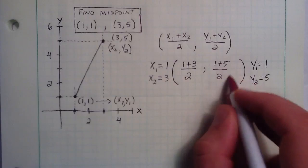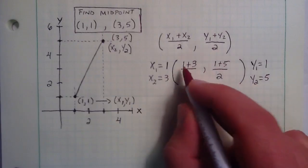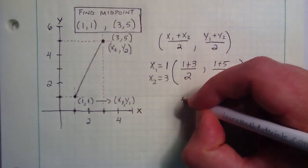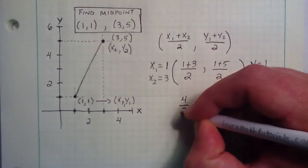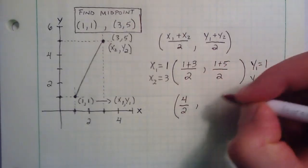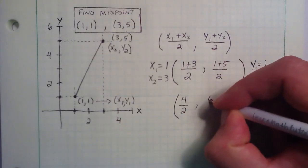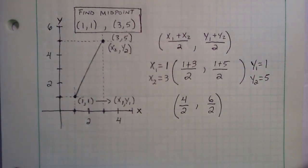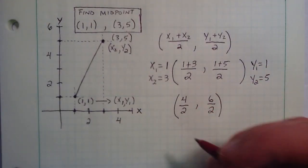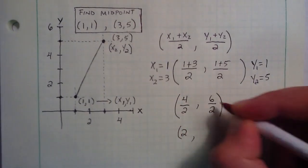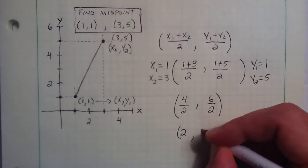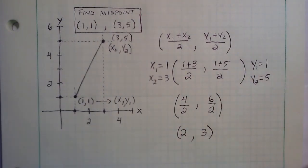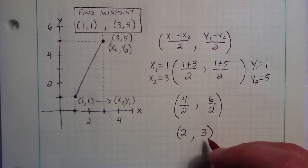So, we have the midpoint, but let's go ahead and simplify it. 1 + 3 is simply 4, and then that's still divided by 2. And 1 + 5 is 6, which is divided by 2. And we can further simplify. 4 divided by 2 simply gives us 2. 6 divided by 2 gives us 3. And there we have it. We have our simplified midpoint.